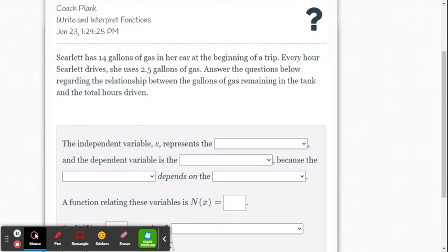Scarlett has 14 gallons of gas in her car at the beginning of the trip. Every hour Scarlett drives, she uses 2.5 gallons of gas. Answer the questions below regarding the relationship between the gallons of gas remaining in the tank and the total hours driven.